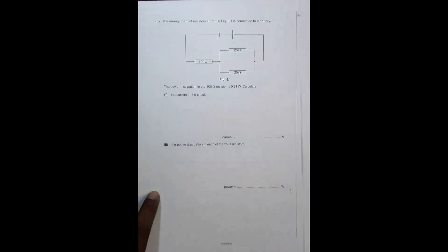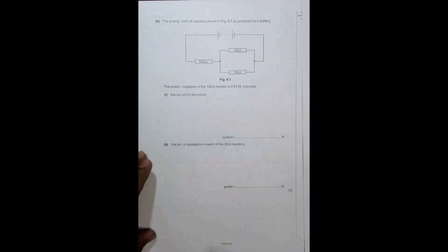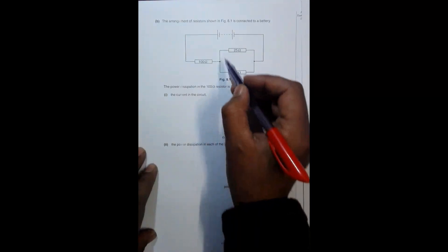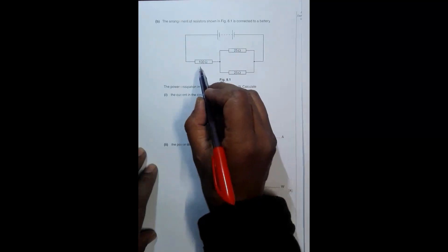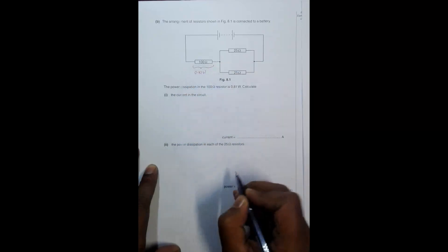Now the next part has a combination of series and parallel resistors: a power source with a 100 ohm resistor and two 25 ohm resistors in parallel. We are given that the power dissipation in the 100 ohm resistor is 0.81 watt. We have to find the current.